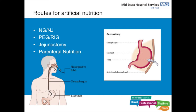The routes for artificial nutrition include NG (nasogastric), which will be the most common on the wards; NJ (nasojejunal); PEG and RIG, which are longer-term options; jejunostomy, going into the jejunum; and parenteral nutrition, which is IV. The dietitian will assess which is required and can provide advice. The nutrition nurse can also advise — for example, on when a patient might need a PEG or RIG. If any of your patients need any of these, please refer to the dietitian.